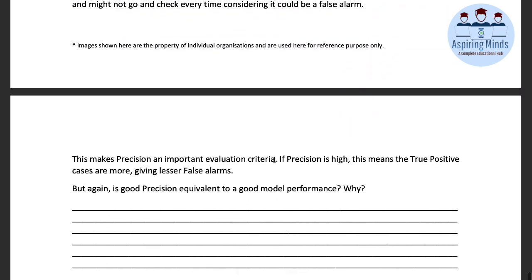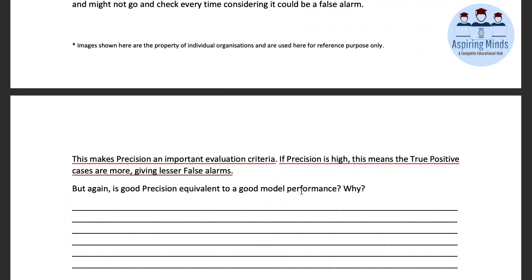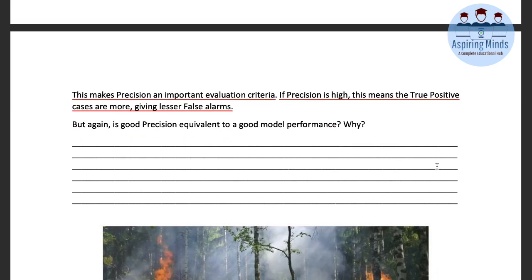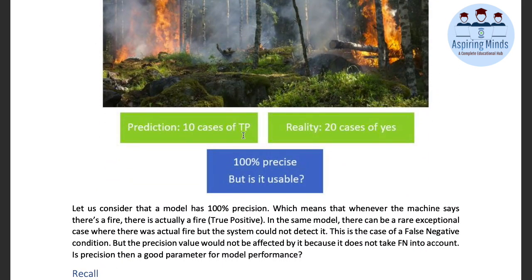This makes precision an important evaluation criterion. If precision is high, it means true positive cases are more and there are fewer false alarms. If precision is high, it means that when prediction is yes and reality is yes — those cases dominate over false positives where prediction is yes but reality is no. For example, suppose the model predicted fire in 10 cases and reality had 20 cases of fire. Precision would be 100% if all 10 predicted cases were correct — 10 out of 10 matched reality.